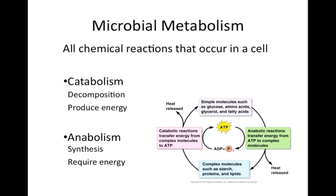You will notice that as catabolic reactions occur, ATP is produced. ATP is the energy storage molecule, so it makes sense that as energy is produced in catabolic reactions, it is stored as ATP. The ATP that is created in catabolic reactions is used to fuel the energy-requiring anabolic reactions.